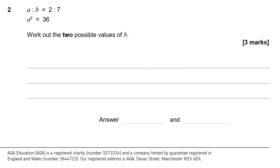Question 2 says the ratio of a to b is 2 to 7, and we're told that a squared is equal to 36. Work out the two possible values of b. Notice this is emboldened, so there are two possibilities. That derives from the fact that if a squared is equal to 36, there are actually two possible values of a. What times itself is 36? Well, it's either 6, or it could be minus 6, because negative 6 times negative 6 is positive 36. So the solution is plus or minus 6 — a could be 6 or a could be minus 6.